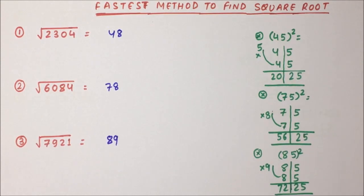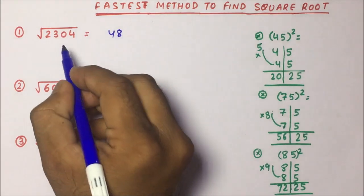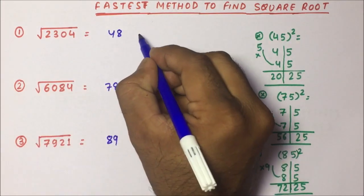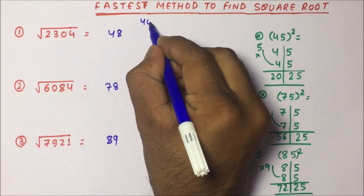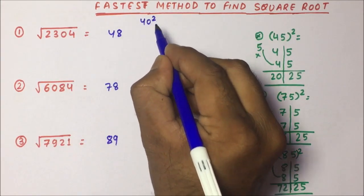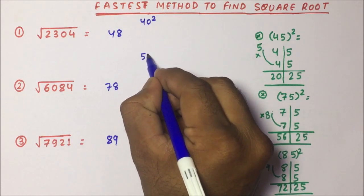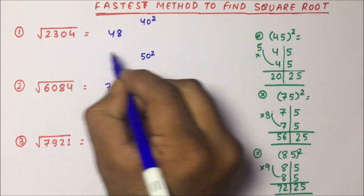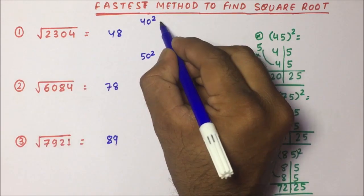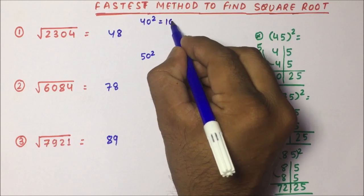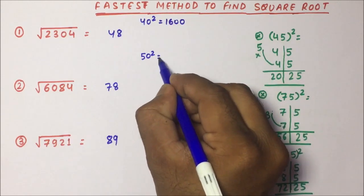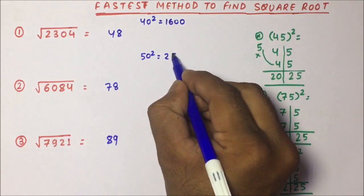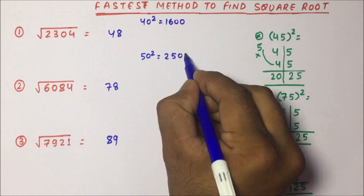Now, what is the method I have applied here to find out this square root? Let us understand. So for 2304, the square root of this number will belong in between 40 squared and 50 squared, because 40 squared is 1600 and 50 squared is 2500.